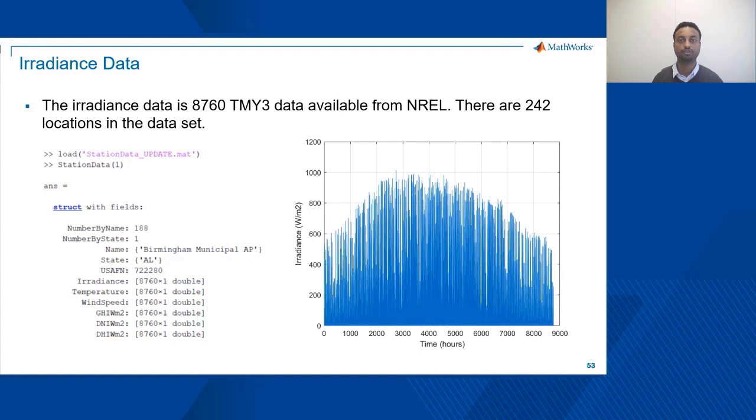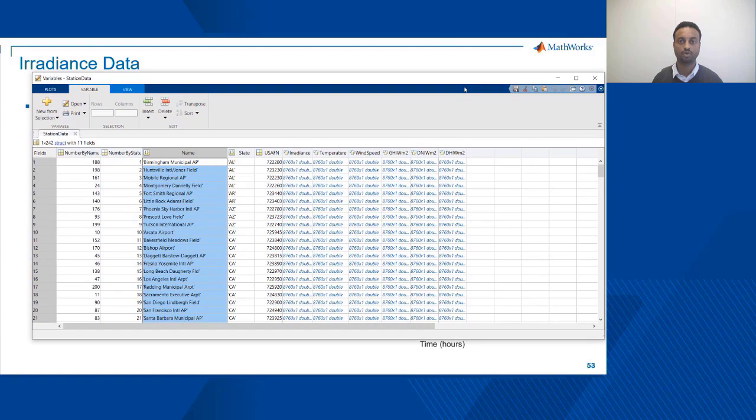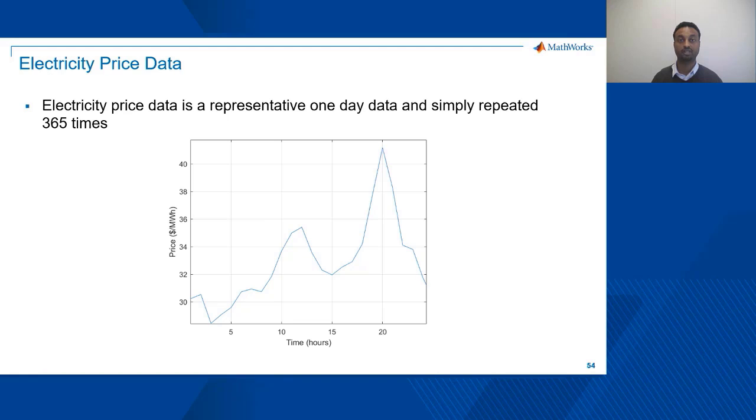A full year irradiance data for the 242 locations in North America was captured from National Renewable Energy Laboratory. The data not only contains the solar irradiance, it also contains other information relevant for renewable energy studies such as wind speed and temperature. And for the electricity price data, a representative one day data per location was used and it was simply repeated 365 times to calculate the cost for a given year.